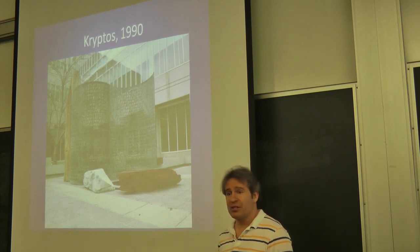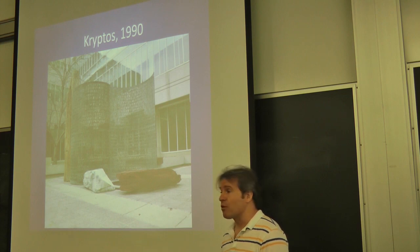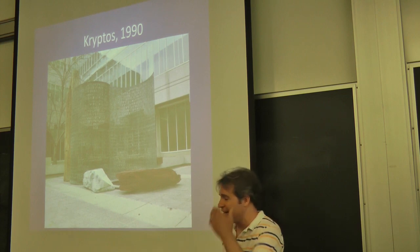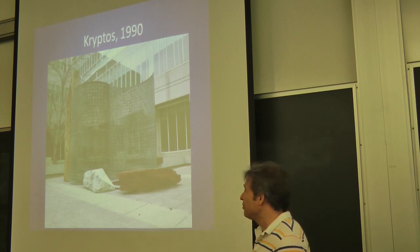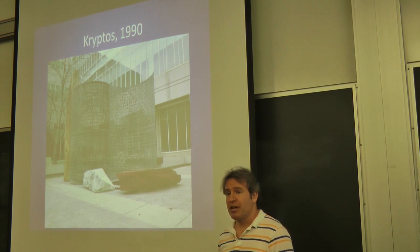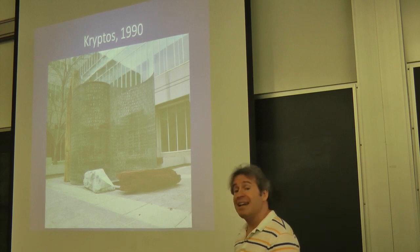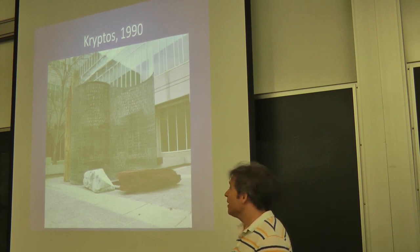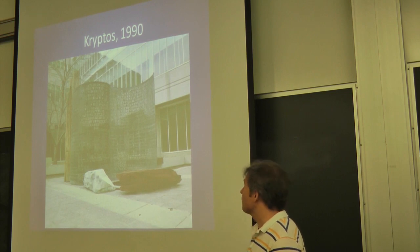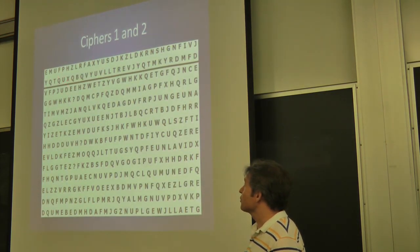Cryptos. This is a very famous unsolved cipher. This is at CIA headquarters. So you can't just go and look at it. You need to get on a visitor list somehow. If you do, you'll take a picture of you with it. But this was designed by James Sanborn and was installed in 1990. Now, if you look at these two panels here, it's ciphertext. Four different messages.